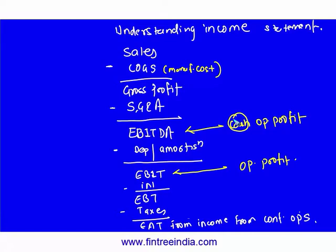So if your EBIT is 500, you would say my operating profit is 500. But if depreciation was 100, then your EBITDA was 600 and your cash operating profit was 600.